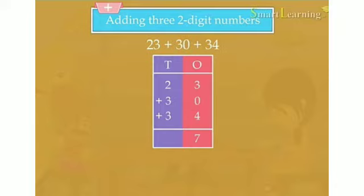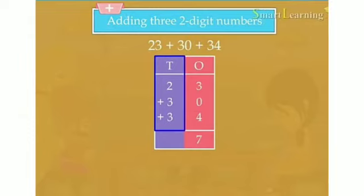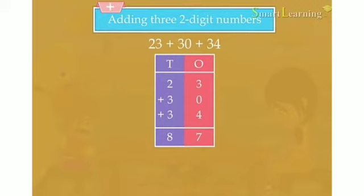Here 3 plus 0 plus 4 is equal to 7. Now add the tens, 2 plus 3 plus 3 is equal to 8. So the sum of these numbers is 87.